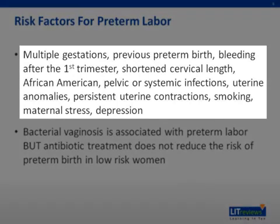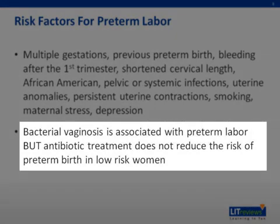There are several risk factors for preterm labor. These include multiple gestations like twins or triplets, history of previous preterm birth, bleeding after the first trimester, shortened cervical length, African-American race, pelvic or systemic infections, uterine anomalies such as a unicornuate or bicornuate uterus, persistent uterine contractions over a long period of days to weeks, smoking, maternal stress, and depression. With respect to vaginal infections, it is important to know that bacterial vaginosis is associated with preterm labor. However, the relative contribution of this condition to preterm labor remains controversial, especially in women with no other risk factors.